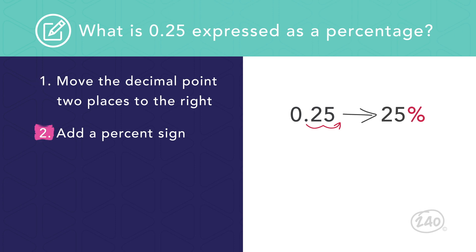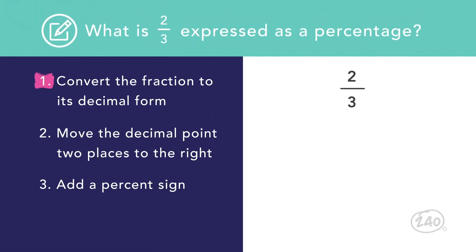So 0.25 is equal to 25%. How do we write two thirds as a percentage? First, we'll convert the fraction to its decimal form by dividing the numerator by the denominator. Using a calculator will show us that two thirds equals 0.66 repeating.